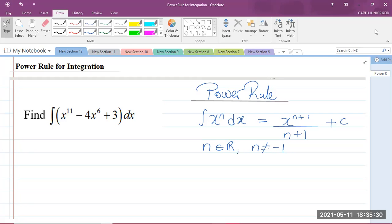So here we have a question which says, find the integral of x to the power of 11 minus 4x to the power of 6 plus 3 with respect to x. Now, this type of integral is what we call the indefinite integral, and this is because it doesn't have any limits in the integral.